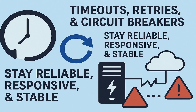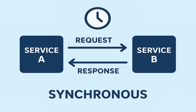So using timeouts, retries, and circuit breakers, we can help the system stay reliable, responsive, and stable, even when services are slowing down or failing. That was enough about synchronous communication and how to mitigate its problems. Just one last thing: the most common tools we use for synchronous communication.